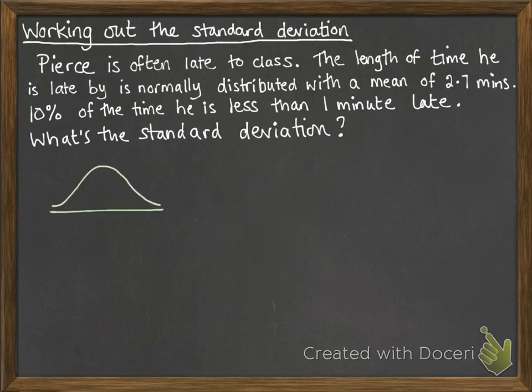So that looks like this. We've got a normal distribution. The mean is 2.7. 10% of the time he's less than one minute late, so here's the one minute. We need to decide which side of that line to shade in. We're going less than one minute, so we're shading in that side and that's 10%, which is 0.1.